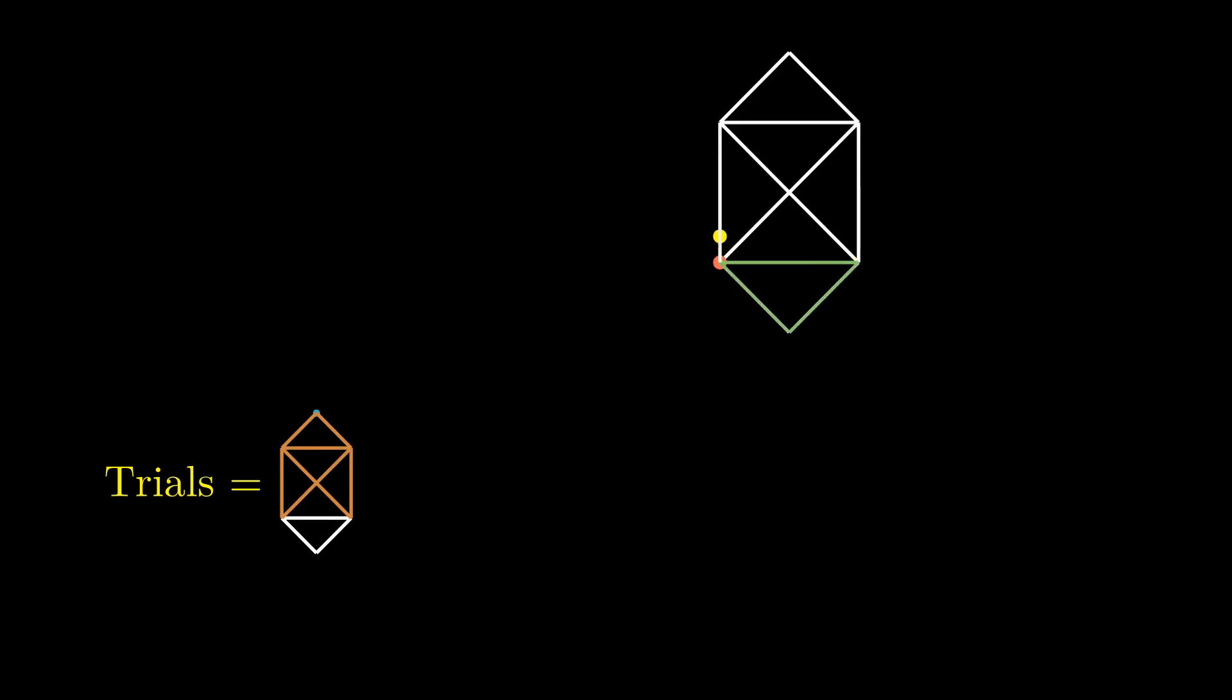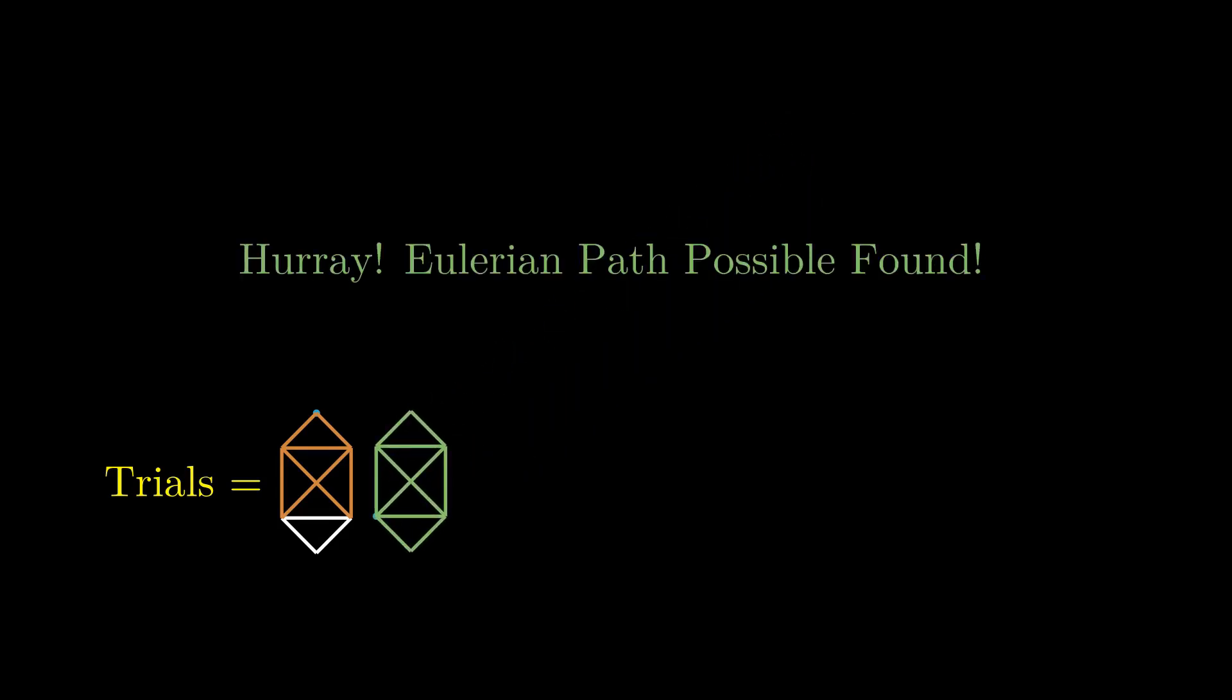In this example as well, an Eulerian path is possible. On top of that, it is also possible to return to the same point you started on even by following the restrictions mentioned earlier. Now, this is called an Eulerian circuit.